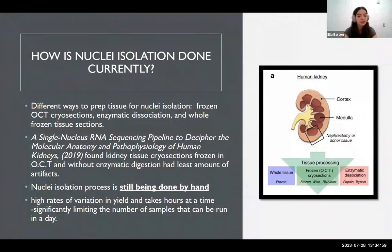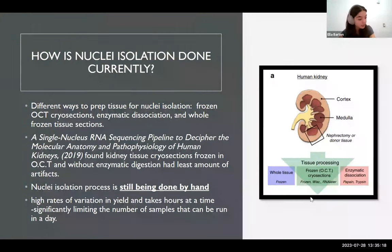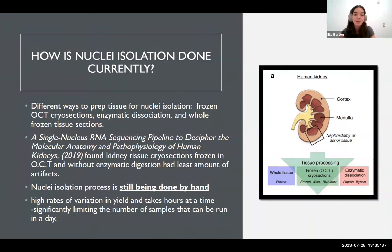After having some background information on nuclei isolation, the next step is to understand how nuclei isolation is done currently. There are three different ways to prep tissue for nuclei isolation, as seen in this figure from a previous article that my research lab presented. The three ways are frozen in OCT, cryosections, enzymatic dissociation, and whole frozen tissue sections. This past research paper was published in 2019, called 'A Single Nucleus RNA Sequencing Pipeline to Decipher the Molecular Anatomy and Pathophysiology of Human Kidneys,' and pretty much set up a baseline for this whole process of tissue dissociation and processing for nuclei isolation.